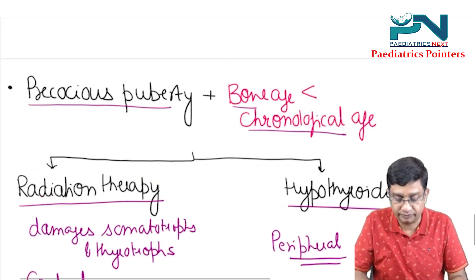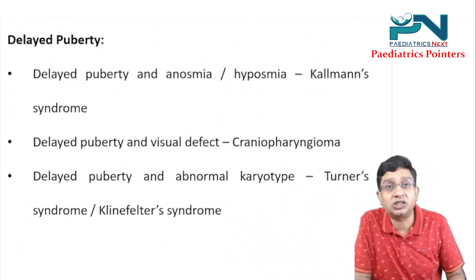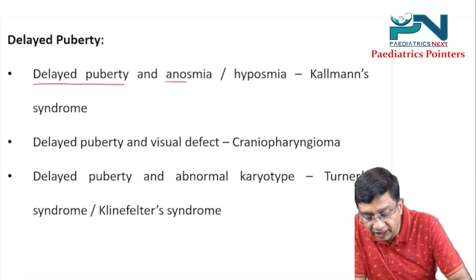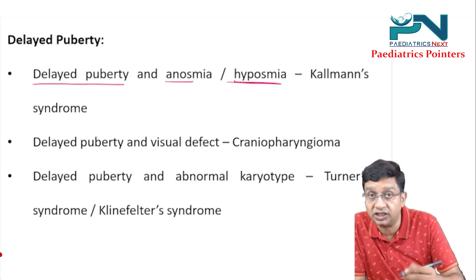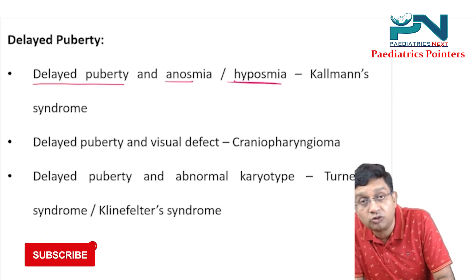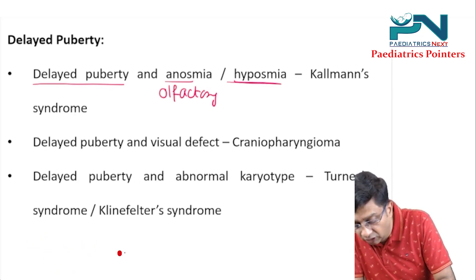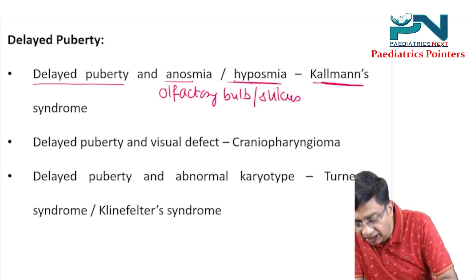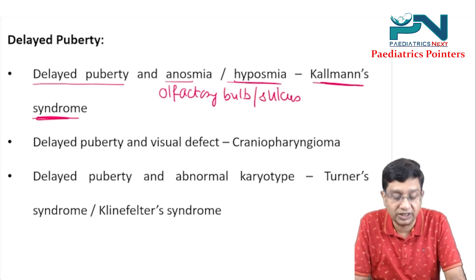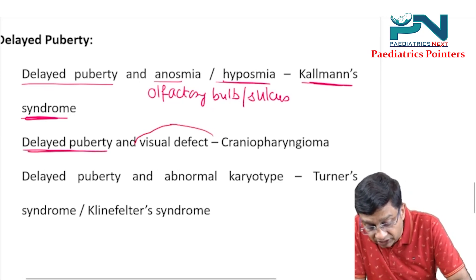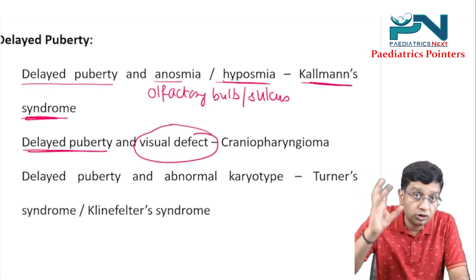Regarding delayed puberty: if the question gives delayed puberty with anosmia or hyposmia — decreased sense of smell due to a defect in the olfactory bulb or olfactory sulcus — your definite answer is Kallmann syndrome.